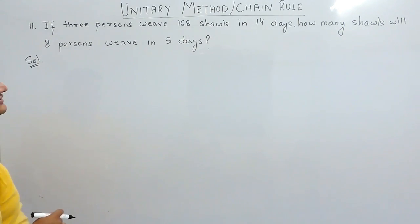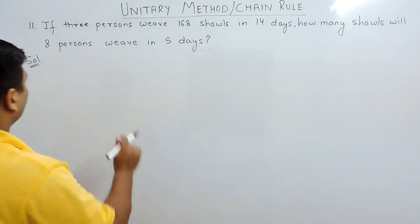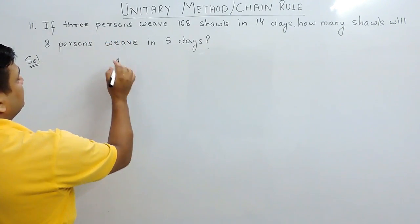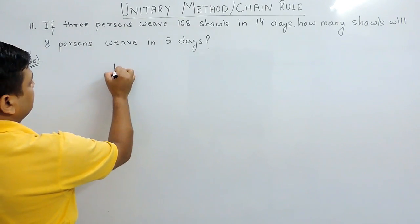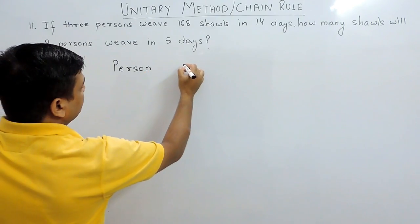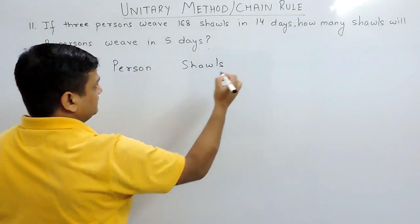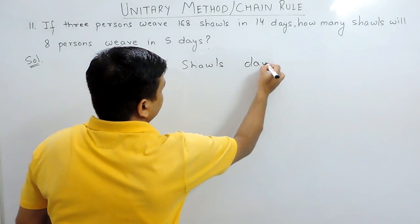In this type of question, firstly we have to find the number of parameters. Here the number of parameters are 3. The first one is person, second is shawls, and the third one is days.